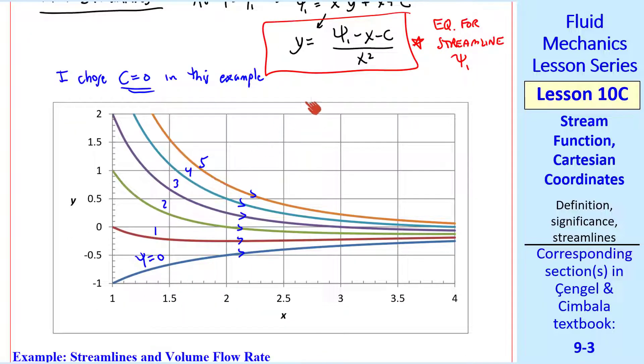I generated these streamlines by setting psi 1 equal to 0, 1 through 5 with c equals 0 and then just plotted this curve for each value of psi. So what kind of flow is this? It's some kind of a converging flow where the streamlines get really close here but they're very far apart here.